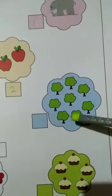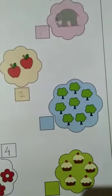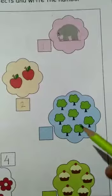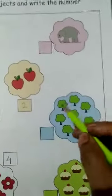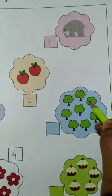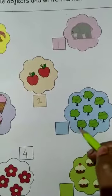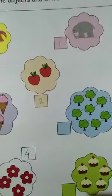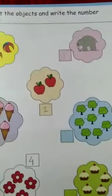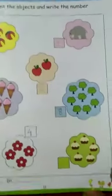And see here — what is here? Here are trees. How many trees? Come on, count: one, two, three, four, five, six, seven, eight. How many trees? Eight trees. So come on, write the number eight here.